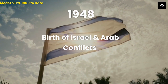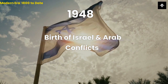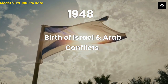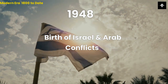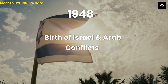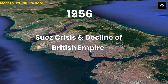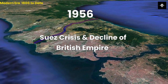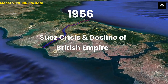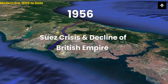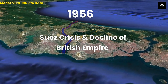Tenth, 1948, the State of Israel was established, leading to a series of conflicts between Israel and its Arab neighbors, including the 1948 Arab-Israeli War and the ongoing Israeli-Palestinian conflict. Eleventh, 1956, the Suez Crisis, which saw British and French forces attempt to seize control of the Suez Canal, marked a key turning point in the decline of the British Empire and the rise of the United States as a global superpower.